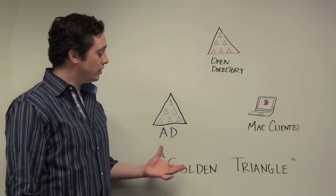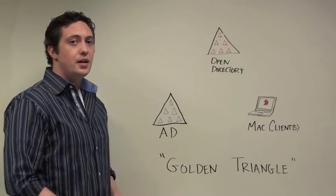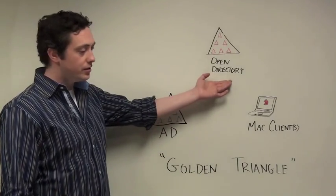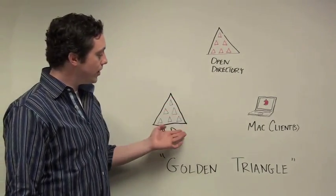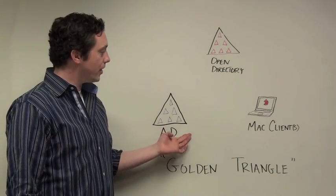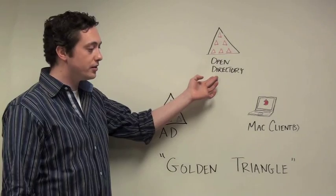The first solution I'd like to show you today is called the Golden Triangle. This is actually a solution that Apple came up with. What you'll do is use Open Directory to join your Macs to Active Directory. The information on the Macs is stored in both Active Directory and Open Directory at the same time.